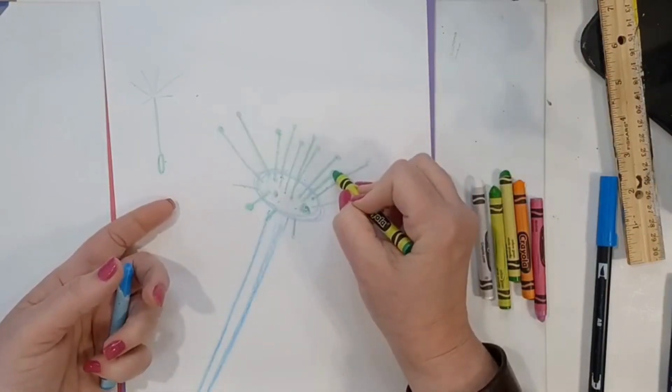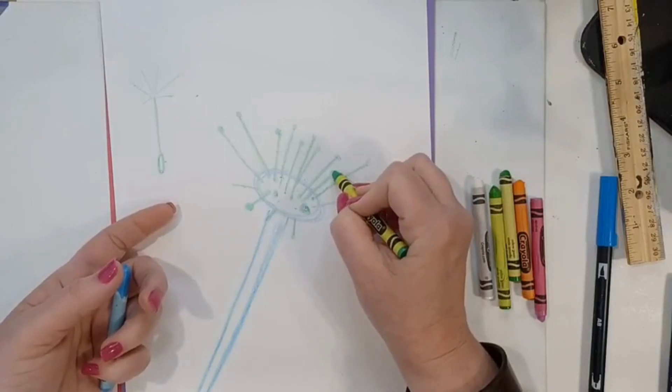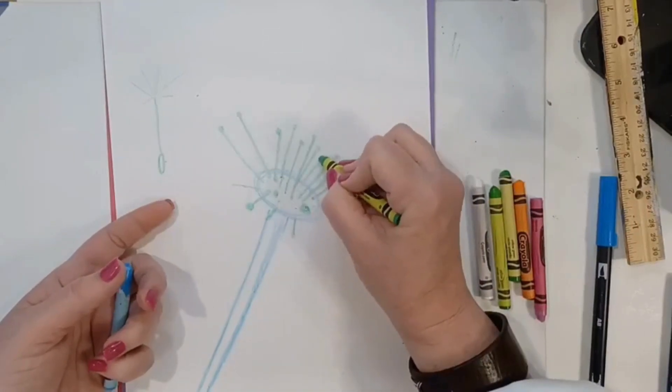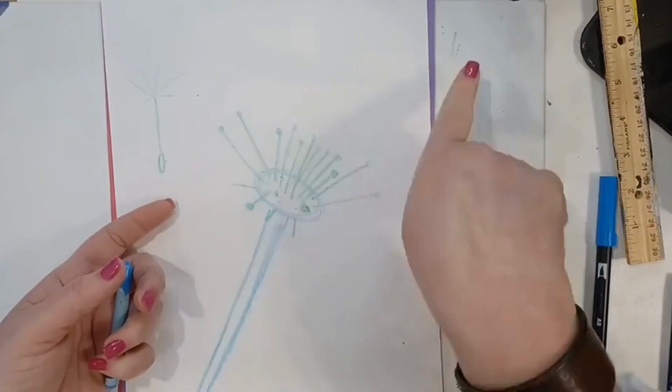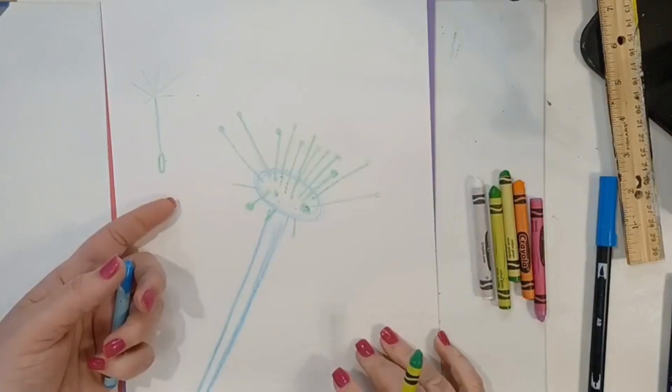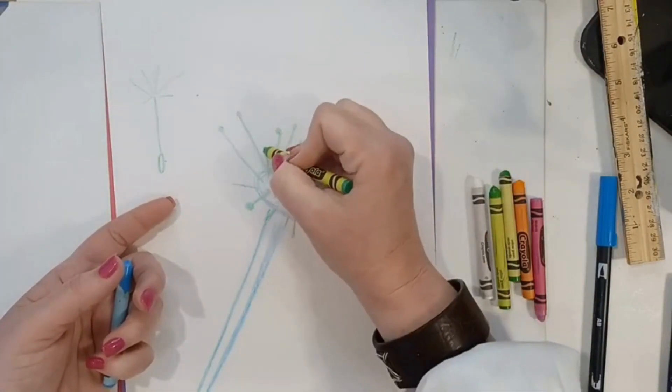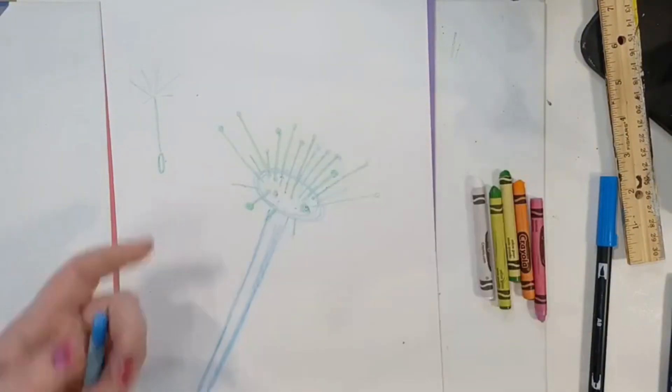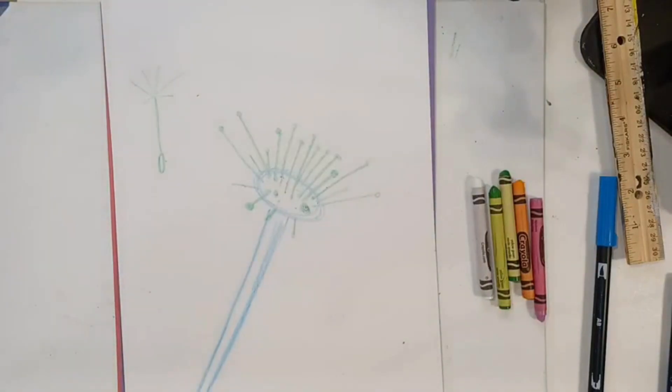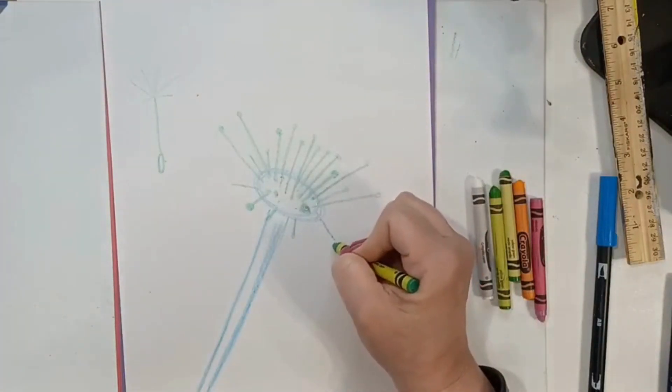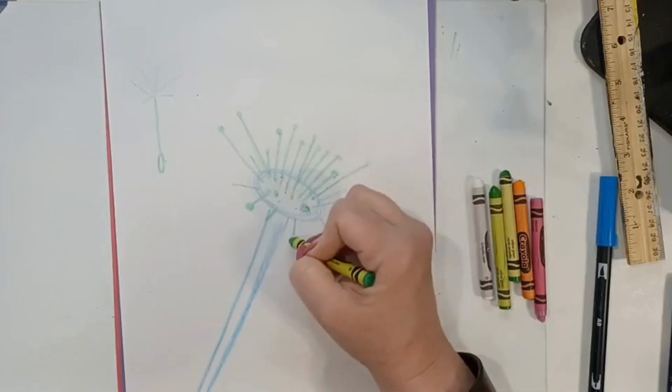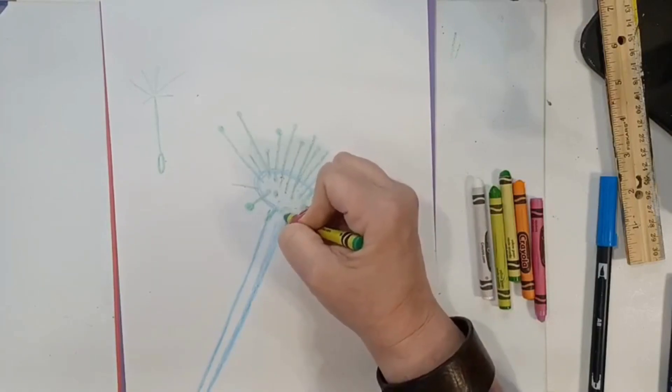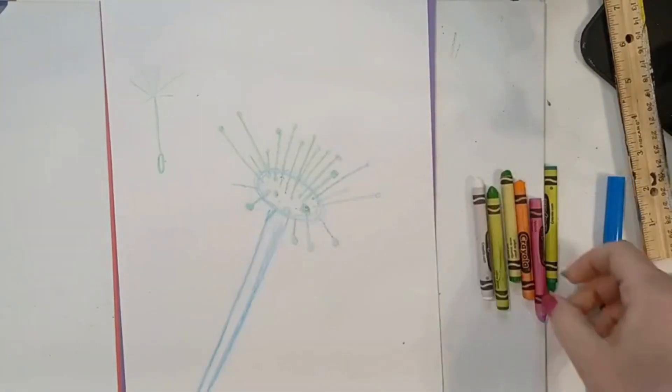When your pin heads are thicker at the top, that's because they're closer to you. If they're thinner at the bottom, they're further away. Does that seem like that would be true? And then you can just kind of build it out and start layering on those lines. You can change your color.